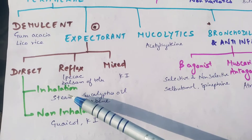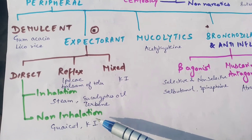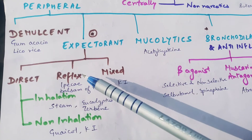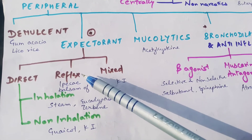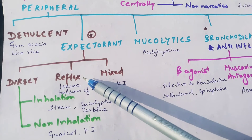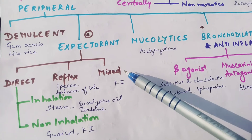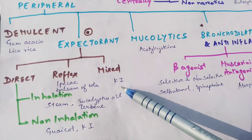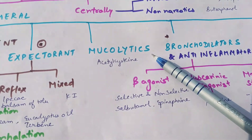Expectorants may be inhalatory or non-inhalatory. Inhalatory: by steam, eucalyptus oil, turpentine; non-inhalatory: by glycol and potassium iodide. Reflex-acting expectorants stimulate the nerve endings like the vagus nerve and cause reflex action on the tracheobronchial glands — examples include ipecac or balsam of tolu. Mixed expectorants have both direct and reflex action, such as potassium iodide.